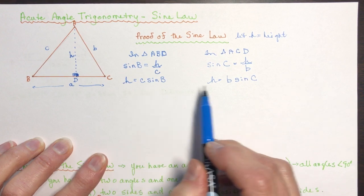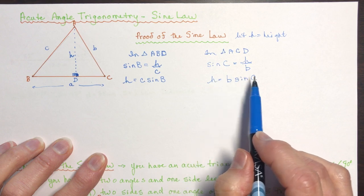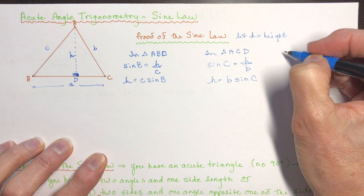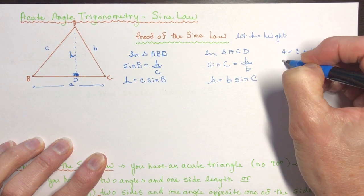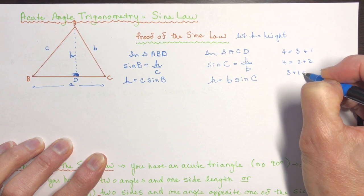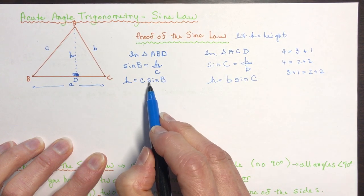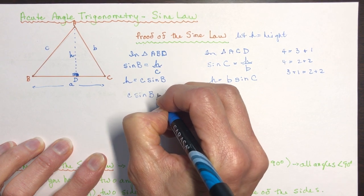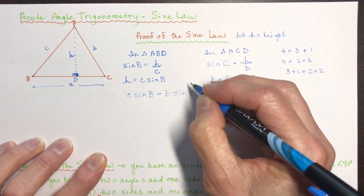Now we have two equations for H. If H equals this and H equals that, then these two expressions are equal to each other — just like if 4 equals 3+1 and 4 equals 2+2, then 3+1 equals 2+2. So c·sin(B) is equal to b·sin(C).